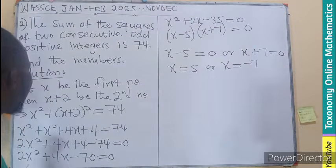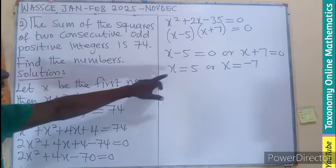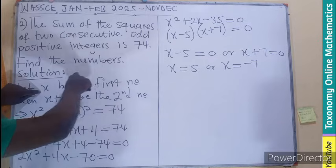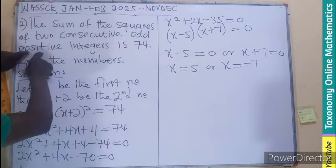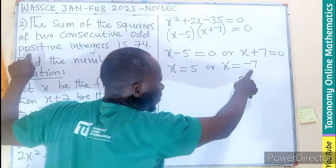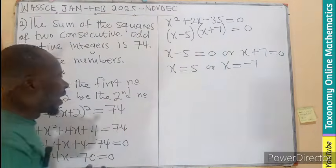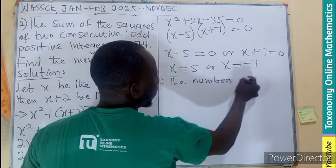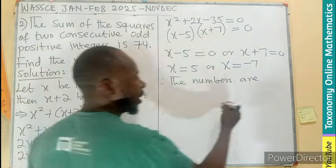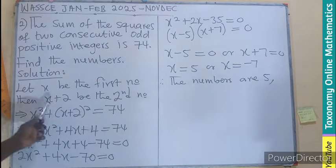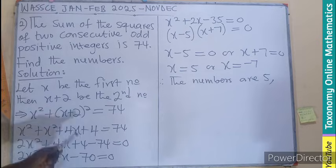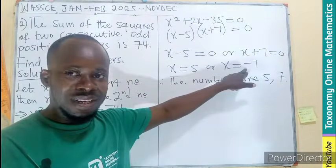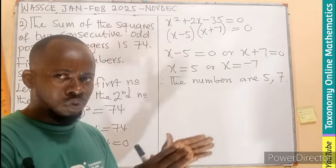We have to go back to the question. We are looking for consecutive odd positive integers. Negative 7 is also an integer, but we are looking for positive numbers, so we pick only X equals 5. Therefore, the first number is 5, and the second number is X plus 2, which is 5 plus 2 equals 7. So the two consecutive odd positive integers are 5 and 7.